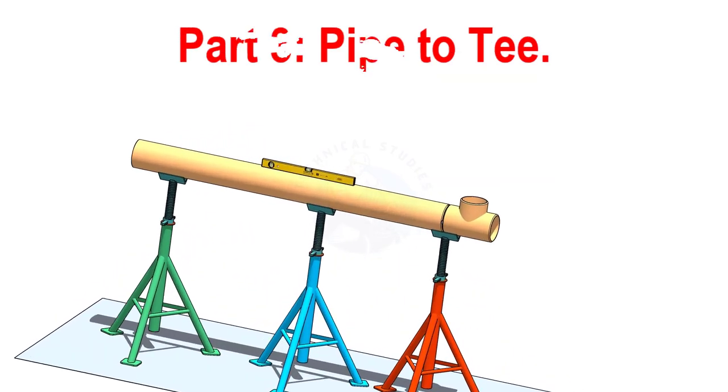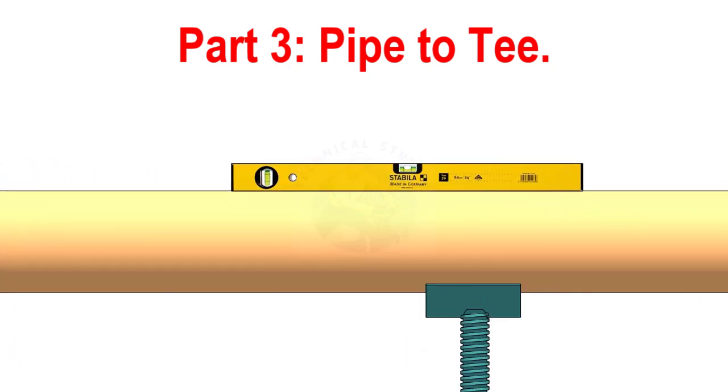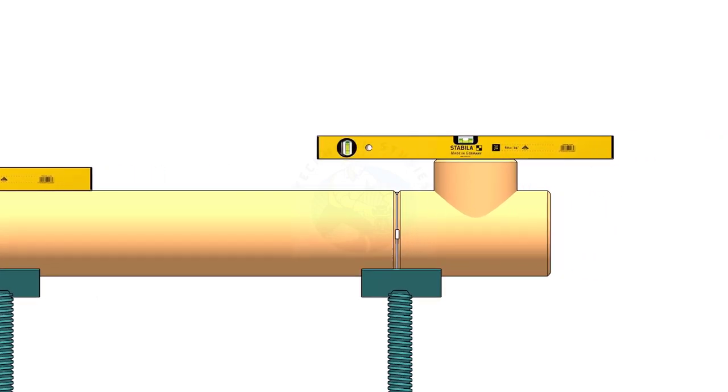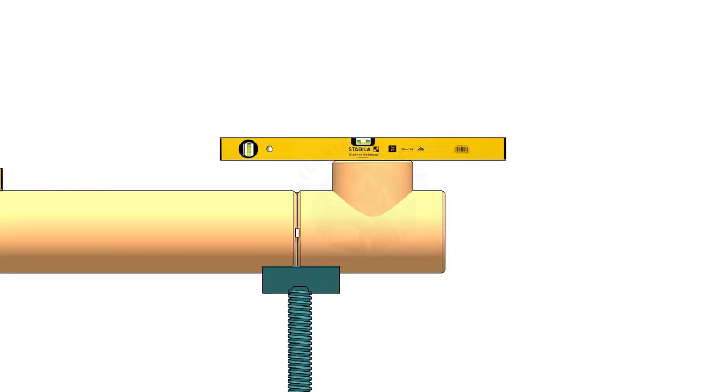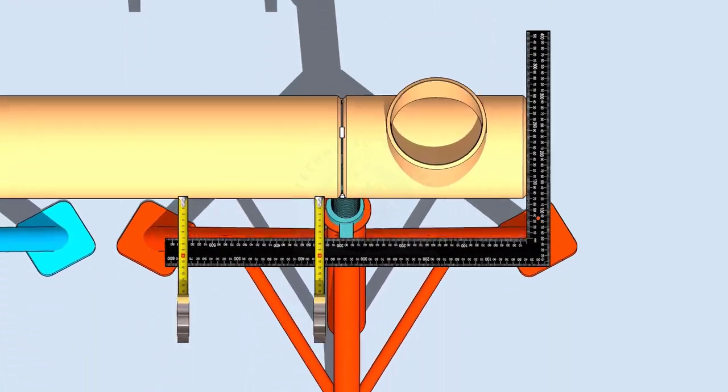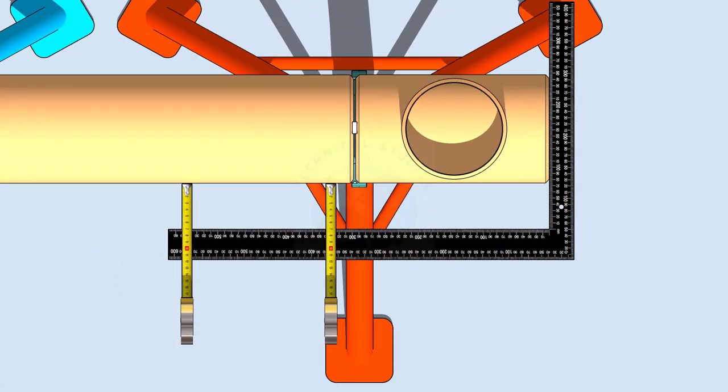When you check a pipe to T fit-up, level the pipe first. Then check the level of the T. After that, hold a large right angle on the face of the T and measure if the distances are the same.